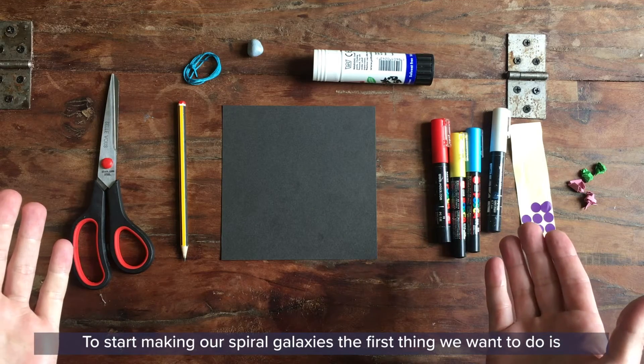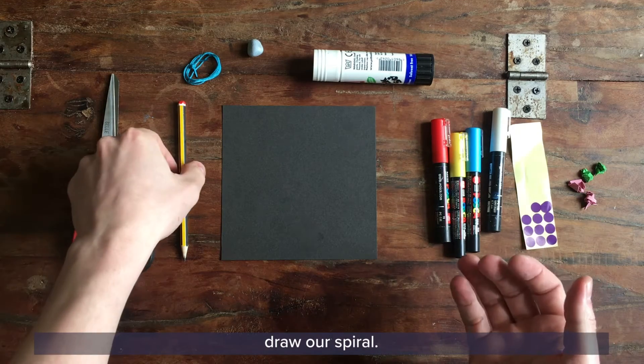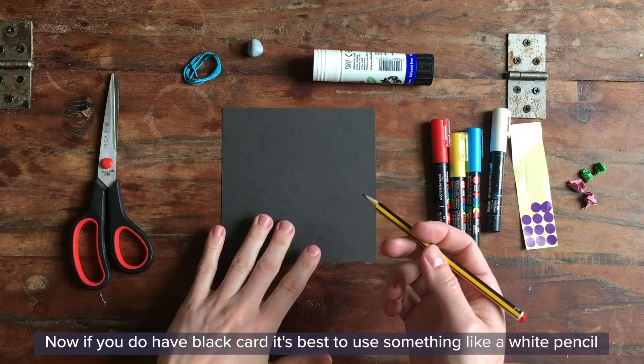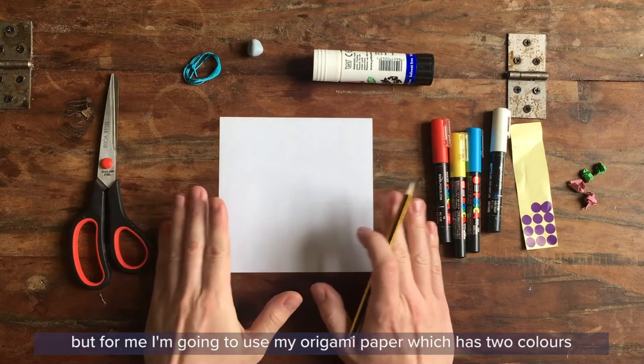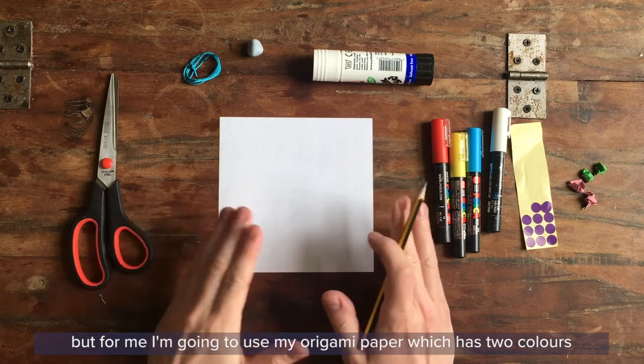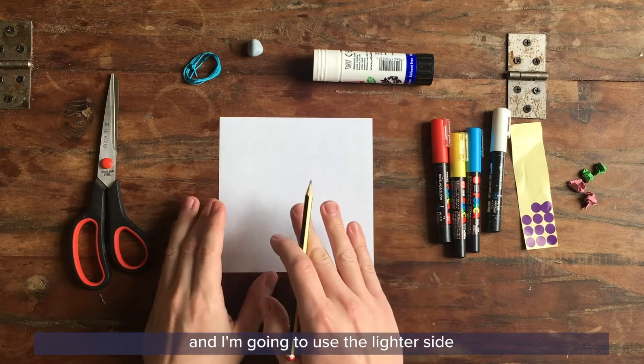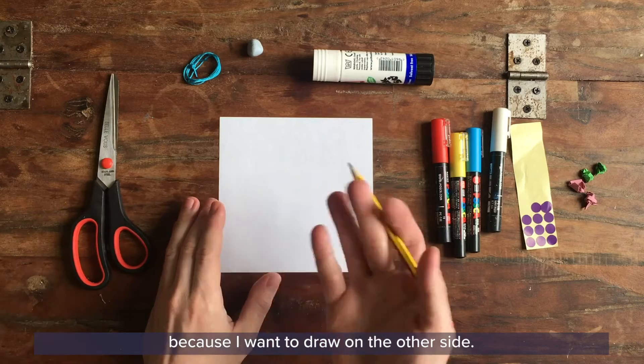To start making our spiral galaxies the first thing we want to do is draw our spiral. Now if you do have black card it's best to use something like a white pencil or a pencil you can see but for me I'm going to use some origami paper which has two colors on both sides and I'm going to use the lighter side because I want to draw on the other side.